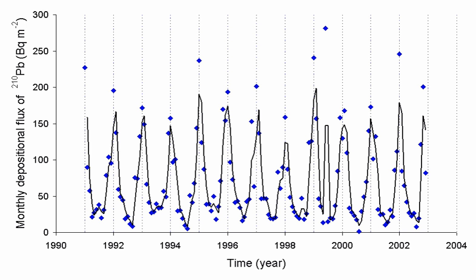Radon is produced by the radioactive decay of radium-226, which is found in uranium ores, phosphate rock, shales, igneous and metamorphic rocks such as granite, gneiss, and schist, and to a lesser degree, in common rocks such as limestone. Every square mile of surface soil, to a depth of 6 inches, contains approximately 1 gram of radium, which releases radon in small amounts to the atmosphere.